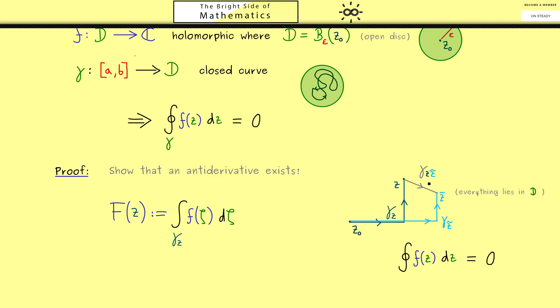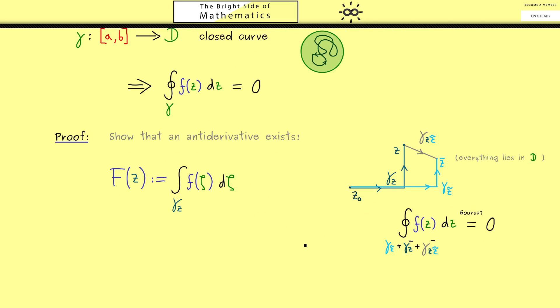This means, for another point z tilde here, the path should look similarly. So, one thing you should immediately note here is, if we choose the curve like this, it's guaranteed that this path lies completely inside the disk. And of course, this is an important part of the proof. Moreover, also the connection line here between z and z tilde lies in our disk D. In particular, we recognize, this is a closed curve given by a polygon inside D. Therefore, we can apply what we have discussed above, namely that the contour integral along this closed curve here is 0.